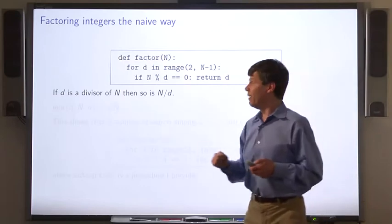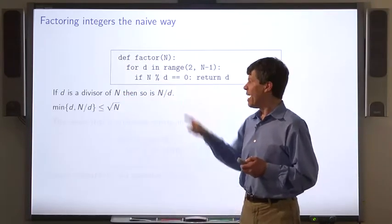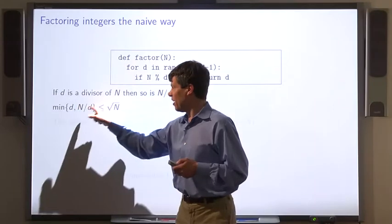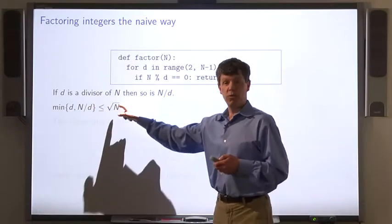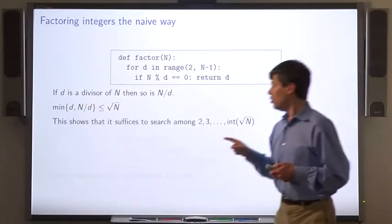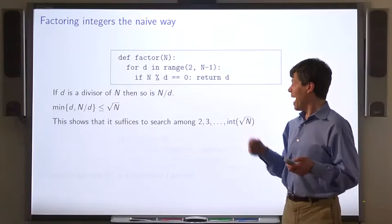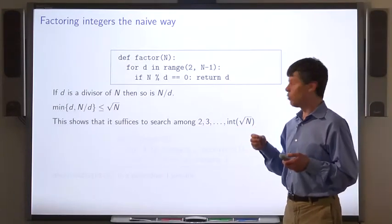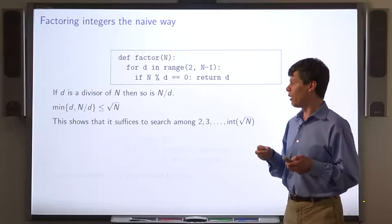In fact, if d is the divisor of n, then so is n over d. And the minimum of d and n over d is less than or equal to the square root of n, which shows that the algorithm actually need only search between 2 and the square root of n.